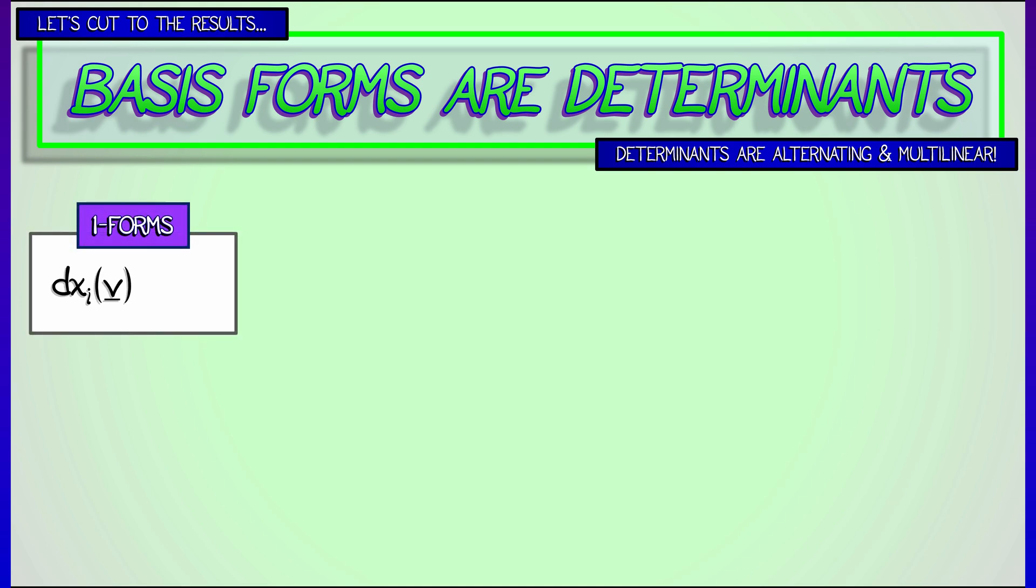Let's see how it works. What's a one form? dx_i. That takes a vector, spits out the i-th component. That's a thing that we've done already. We already know that.